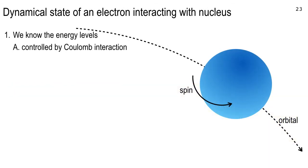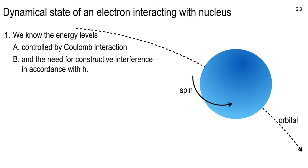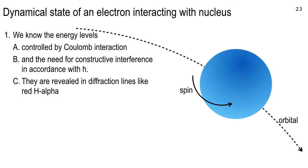Let's talk about the dynamical state of an electron interacting with a nucleus. Energy levels are controlled by the Coulomb interaction, and we need constructive interference in accordance with Planck's constant H. All those wavelengths are revealed in diffraction lines. The H-alpha red line we saw Thursday is a photon of light — not an electron — but the energy levels are created by the need for constructive interference of the electron wave.